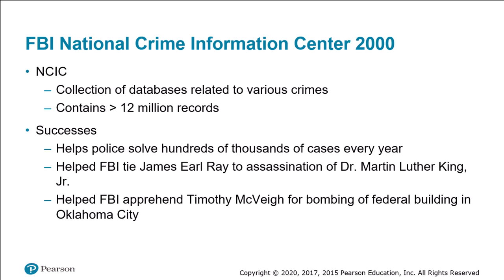The FBI points to the following successes of the NCIC: it helps police solve hundreds of thousands of cases each year, it helped the FBI tie James Earl Ray to the assassination of Dr. Martin Luther King Jr., and it helped the FBI apprehend Timothy McVeigh for the bombing of the federal building in Oklahoma City. Critics of the NCIC, however, point out that people with access have illegally used it to search for criminal records on acquaintances or to screen potential employees such as babysitters.